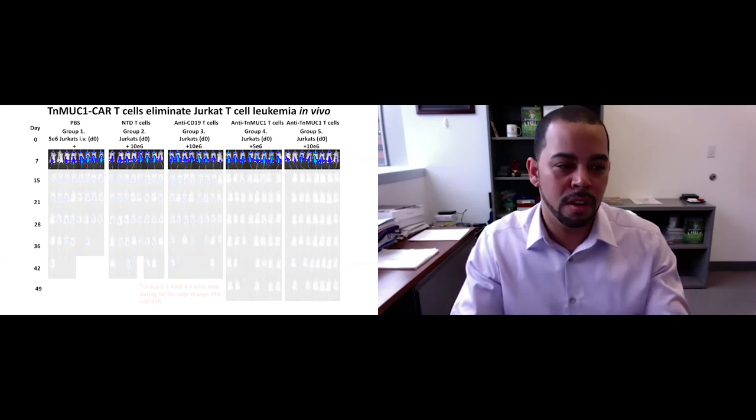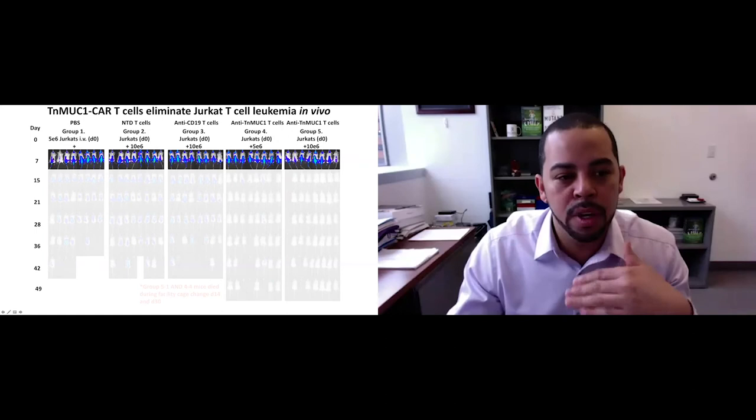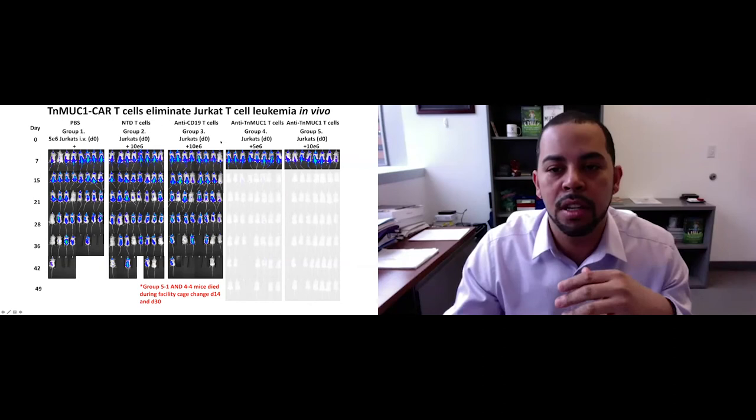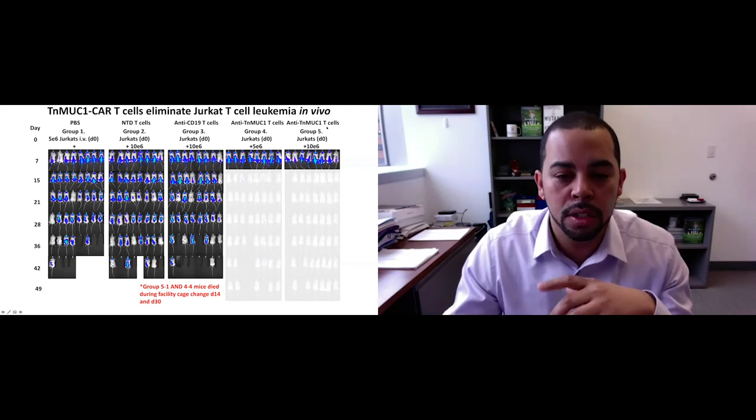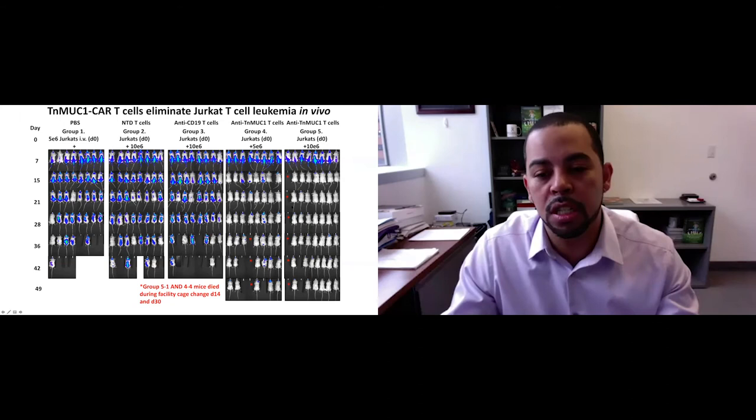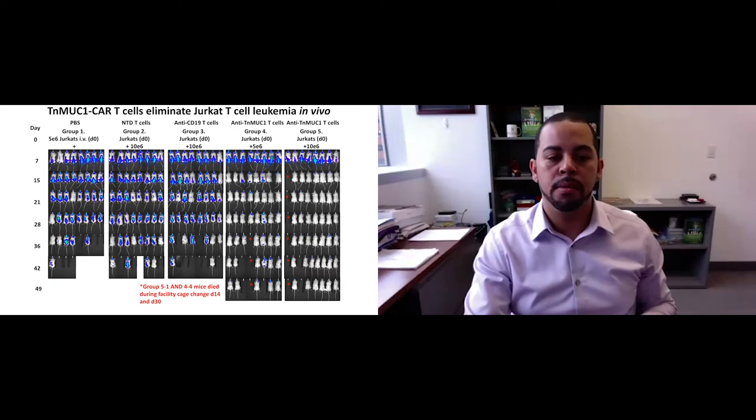We demonstrated the in vivo efficacy of these CAR T-cells, and our first model was the JURKAT model. JURKAT cells have been shown to express high amounts of TN antigen on their cell surface. JURKAT cells have a one-base pair deletion in the gene that encodes for the chaperone protein Cosmc. That means every single protein on the surface of a JURKAT cell that should normally be O-glycosylated has a TN antigen instead. That's a caution to anyone who thinks that something they're studying in JURKAT cells related to glycosylation may have reproducibility in other cell types. JURKAT cells are very unique.